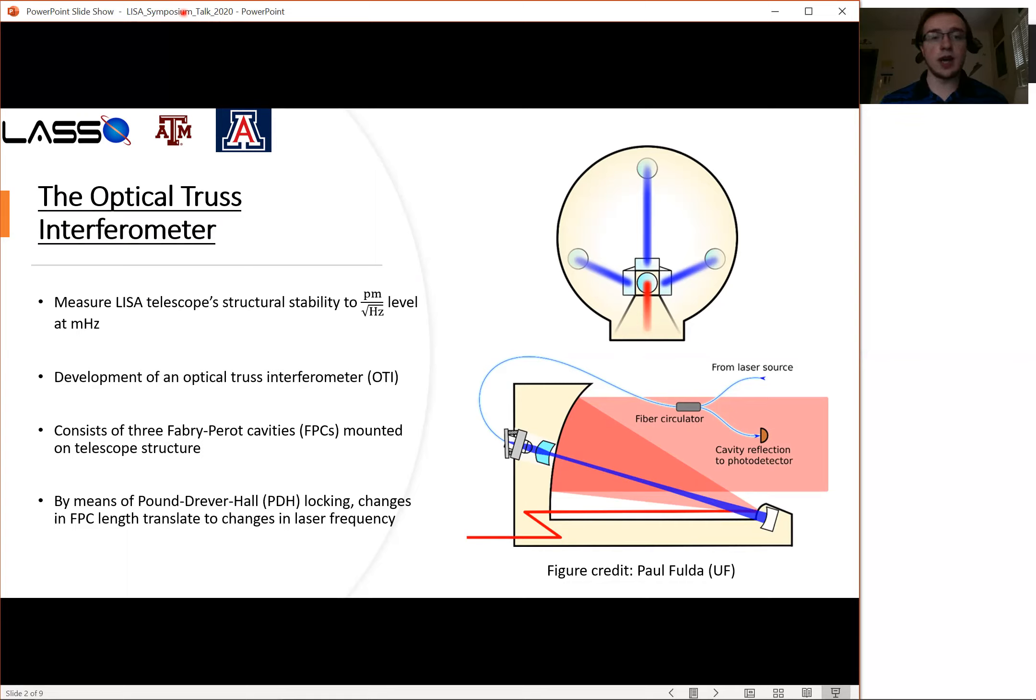The OTI consists of three Fabry-Perot cavities mounted onto the telescope structure. This can be seen over here on the right where we have a head-on view of the telescope with the three cavities along the telescope structure, and below it we can see a side view of how this might be done. By means of Pound-Drever-Hall locking, or PDH locking, changes in the cavity length translate to changes in their corresponding laser frequency that is locked to the cavity.